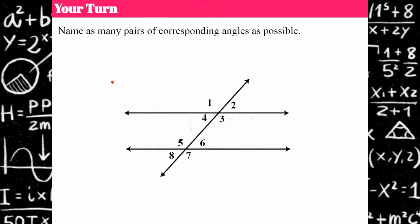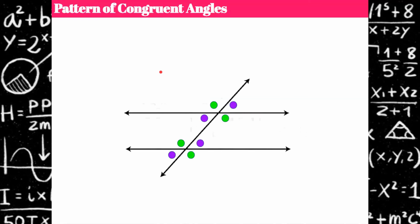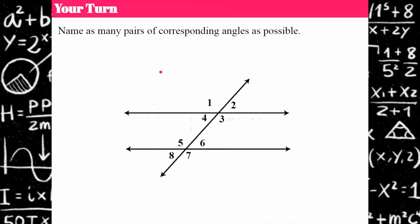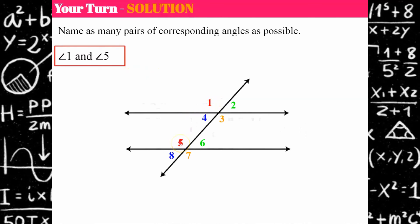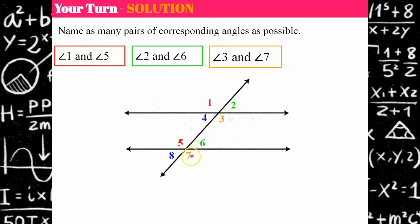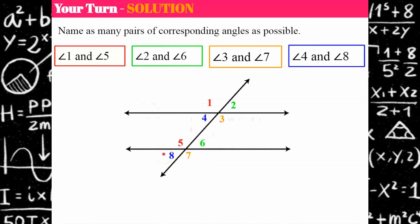Now name as many pairs of corresponding angles as you possibly can from this diagram, then come back and hit play when you're ready to check your work. Angles 1 and 5 are corresponding. Angles 2 and 6 are corresponding. Angles 3 and 7 are corresponding. And angles 4 and 8 are corresponding. Did you get all four pairs?